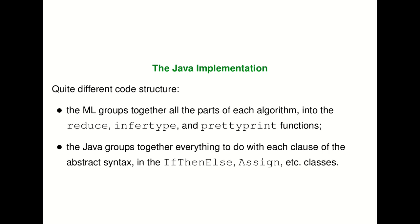Hello and welcome to the third lecture of type systems. In the last lecture we saw how to specify the operational semantics of L1 and then we looked at an implementation of it in ML. On our course website there's also an implementation of L1 in Java, and it's worth looking at because the way that code is structured in ML and Java is quite different.